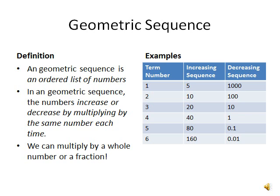Let's look at the increasing sequence first. Our numbers are 5, 10, 20, 40, 80, and 160. This sequence multiplies by 2 each time.